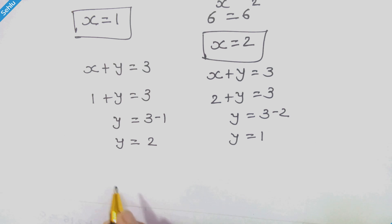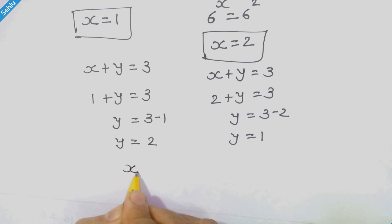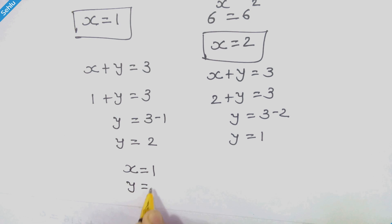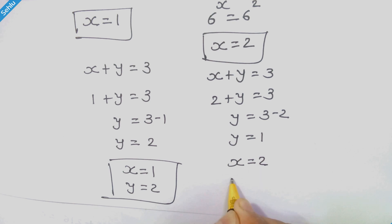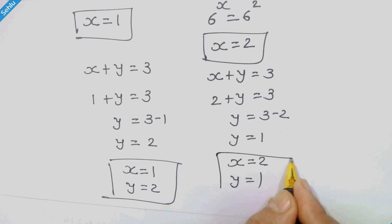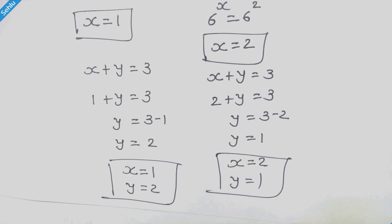So we have two sets of answers. When x is equal to 1, then y is equal to 2. And when x is equal to 2, then y is equal to 1. That's it for now. Please don't forget to subscribe. See you soon in the next one. Bye-bye.